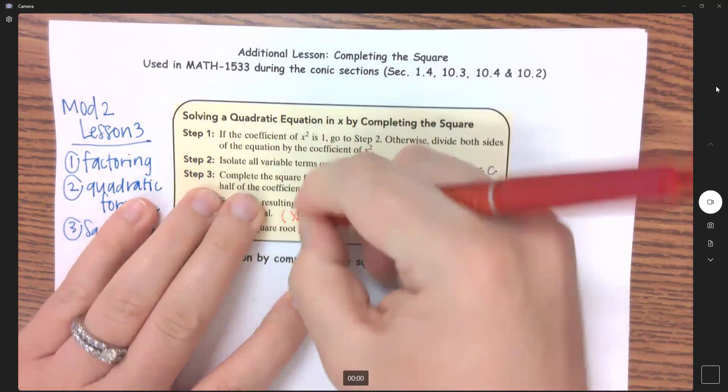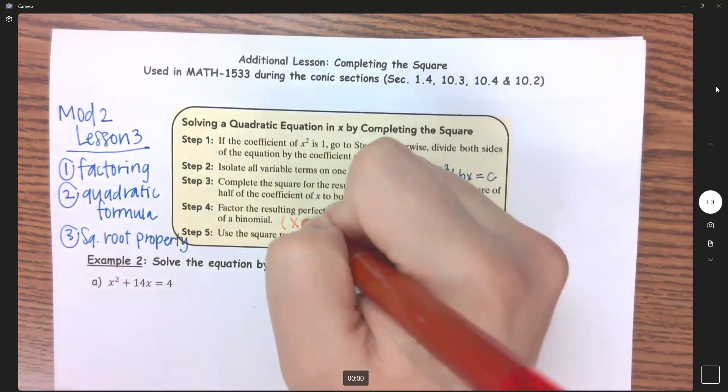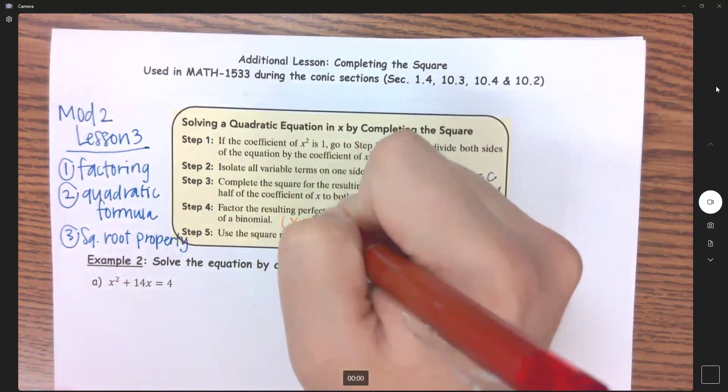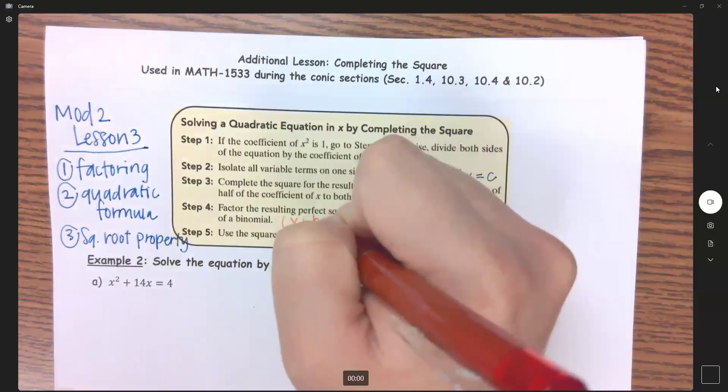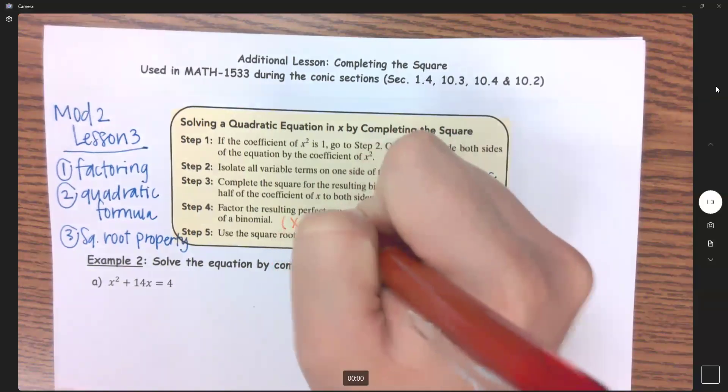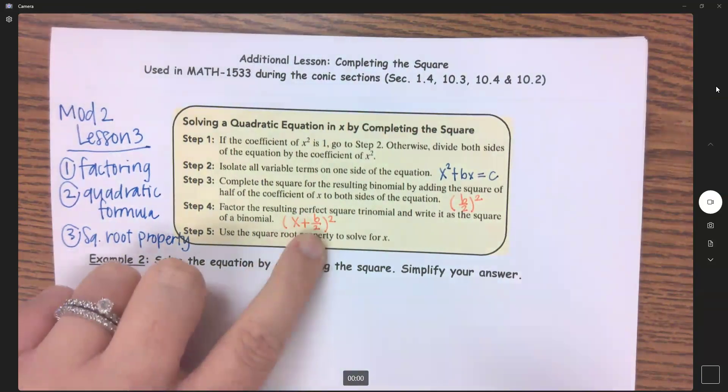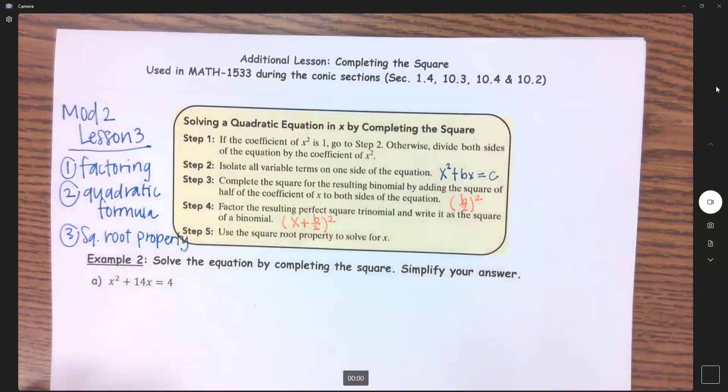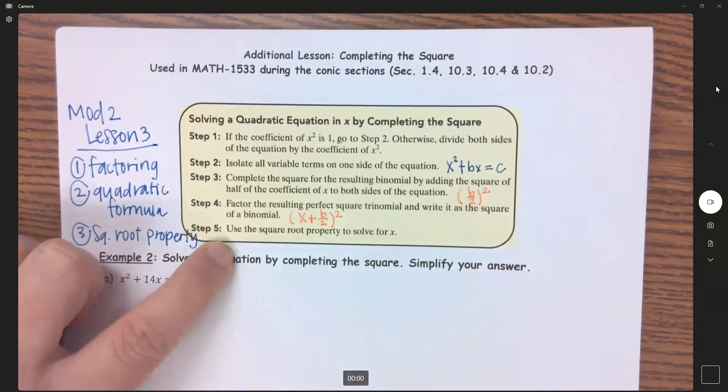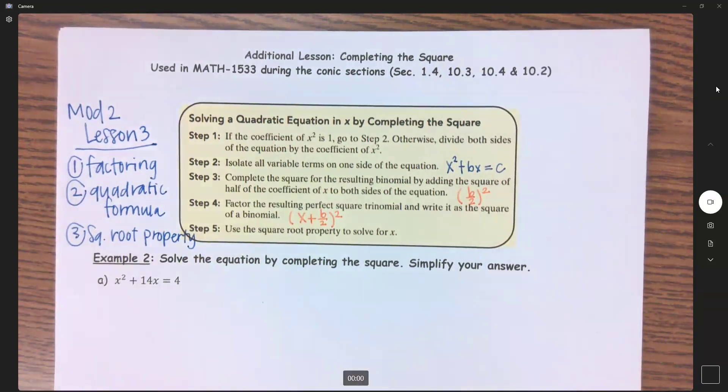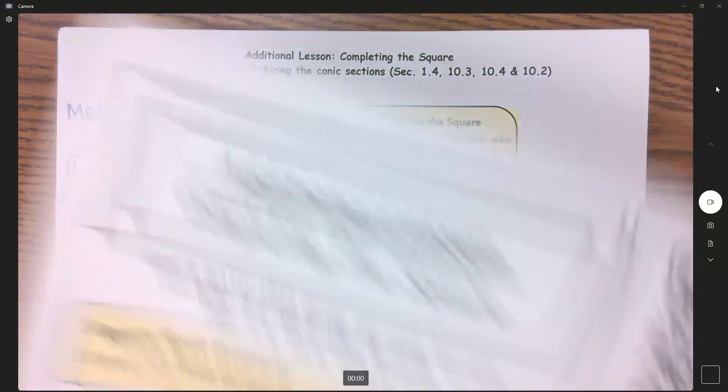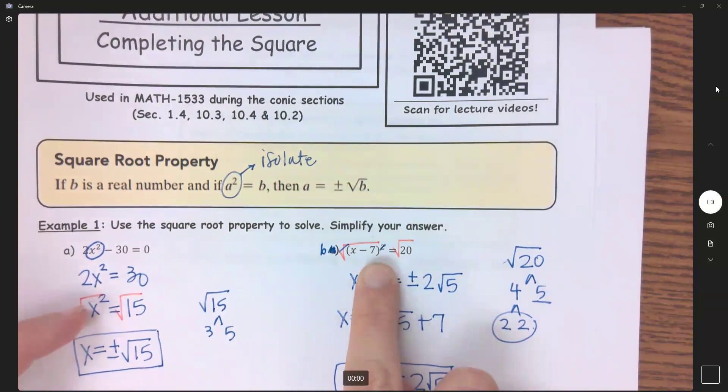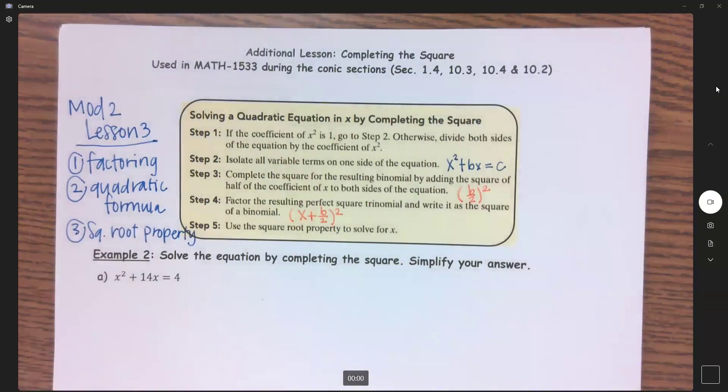Step 4: factor the resulting perfect square trinomial and write it as a square of a binomial. This will make more sense when we get into it, but this will be either x plus or minus, not both. So that's (x + b/2)². That b/2, before you square it here, goes right here, and then the square goes on the outside. Then use the square root property, which we went over last video, to solve for x. And those will honestly all be in this form that we did on part b.